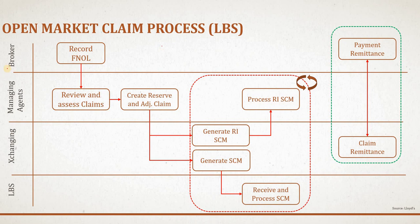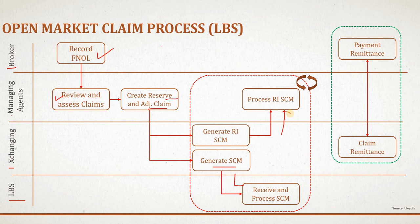Let's have a quick review of how the overall claim process looks. The actors are: broker, managing agent, exchanging, and LBS. The broker records the FNOL; the managing agent reviews and assesses the claim, creates claim reserves, and does claim adjustments. Once the claim is properly processed into the CLASS system, the exchanging will generate the SCM and send it to LBS for their review, and also generate the RI SCM and send it back to the syndicates. This process remains the same whenever a movement happens on the claim. Once everything is done, the exchanging submits the request to STFO to disburse the claim to the broker.